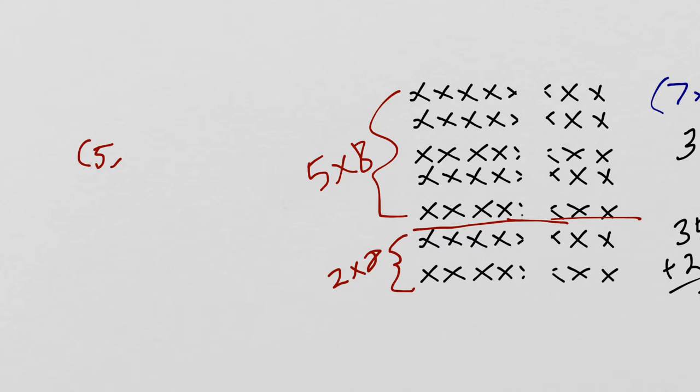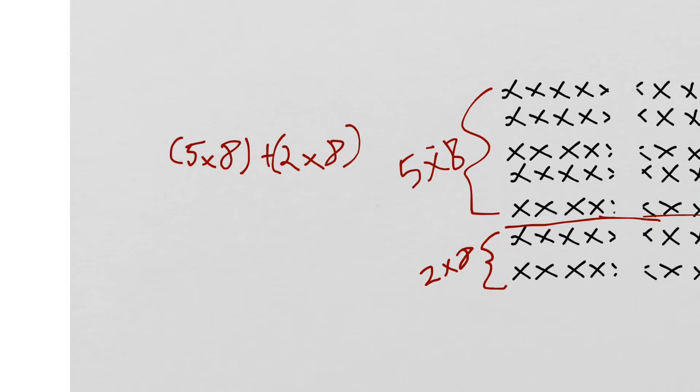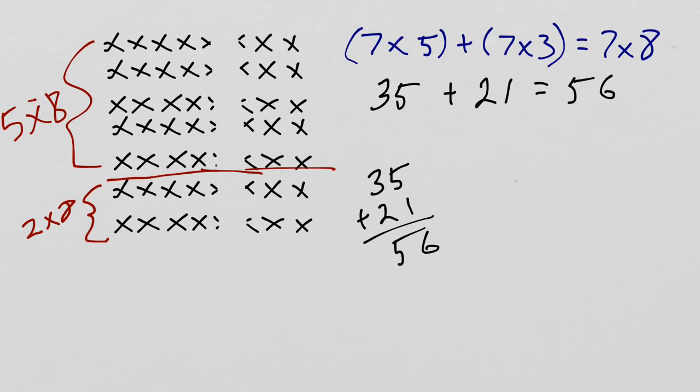Then my math would look like this. 5 times 8 plus 2 times 8, can't forget my parentheses, equals 7 times 8. I'm going to put it on the other side for neatness. Remember, it doesn't matter which side of the equal sign you put things on because it all just means that they are the same. 5 times 8 is 40 plus 2 times 8 which is 16. 40 plus 16 equals 56. No matter how you slice it, it's still going to end up the same.